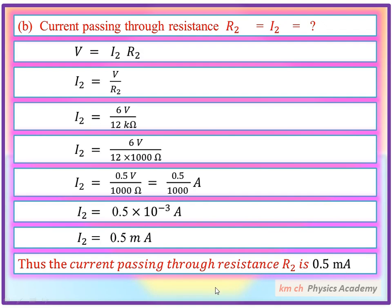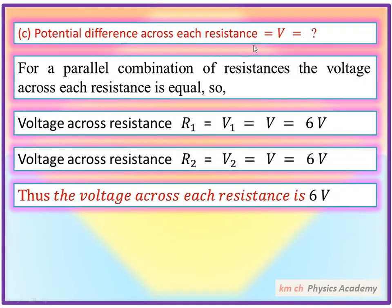اب آخری question رہ گیا ہے کہ potential difference across each resistance کتنا ہونا ہے۔ For a parallel combination of resistances, the voltage across each resistance is equal۔ کیونکہ بیٹری 6 volt کی attach کی ہوئی ہے، اس لیے R1 کے across بھی 6 volt اور R2 کے across بھی 6 volt ہوگا۔ Thus the voltage across each resistance is 6 volt، کیونکہ بیٹری دونوں کے end پر attach ہے اور دونوں کو same potential ملنا ہے۔